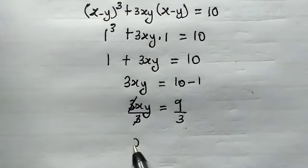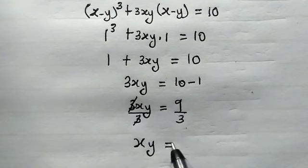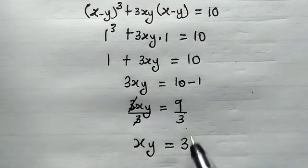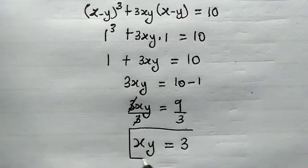And from here we get the right answer: x times y is equal to 9 divided by 3 which is 3. And this is the correct answer.